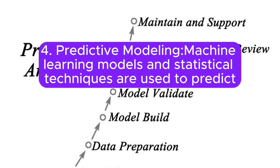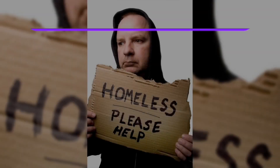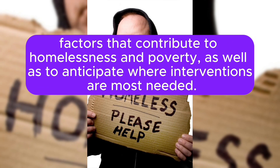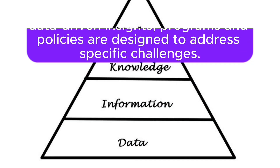Predictive Modeling. Machine learning models and statistical techniques are used to predict factors that contribute to homelessness and poverty, as well as to anticipate where interventions are most needed.